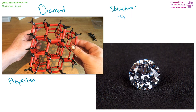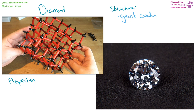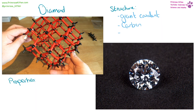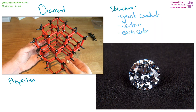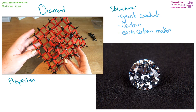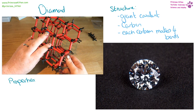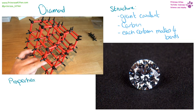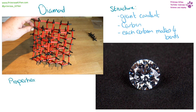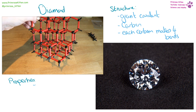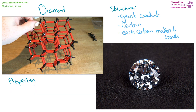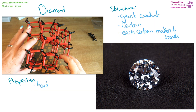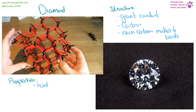Diamond is a giant covalent lattice made of pure carbon — nothing else. Each carbon makes four bonds to four other carbons. The carbon atoms are the black parts and the covalent bonds are the red parts. The main useful property of diamond is that it is incredibly hard, which is why we use it in drills. It is also rare and beautiful, making it precious.